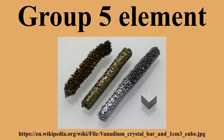There are 160 parts per million of vanadium in the Earth's crust, making it the 19th most abundant element there. Soil contains on average 100 parts per million of vanadium, and sea water contains 1.5 parts per billion of vanadium. A typical human contains 285 parts per billion of vanadium. Over 60 vanadium ores are known, including vanadinite, patronite, and carnotite.